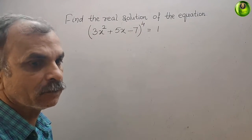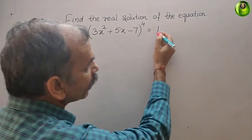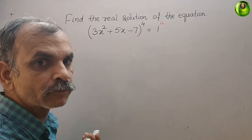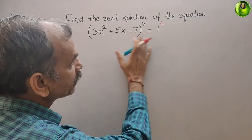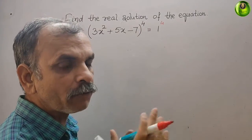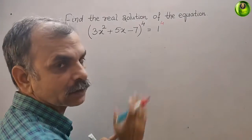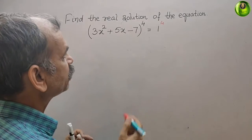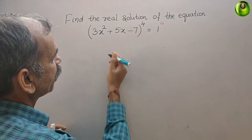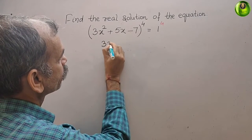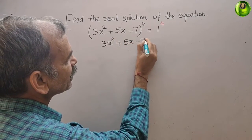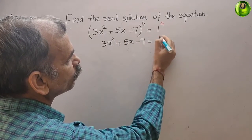What does it mean? If you keep 1 to the power of 4, that is also 1. Now, your base is the same and the power is the same. So we will just take the base. That means 3x² + 5x - 7 is equal to 1.